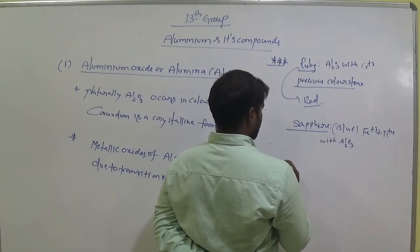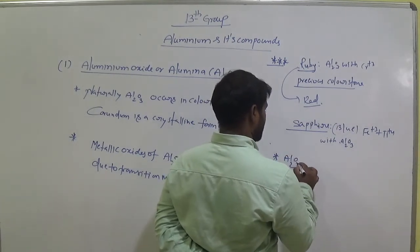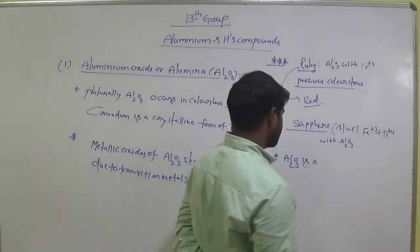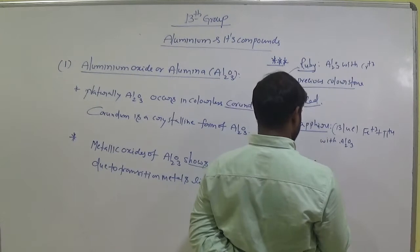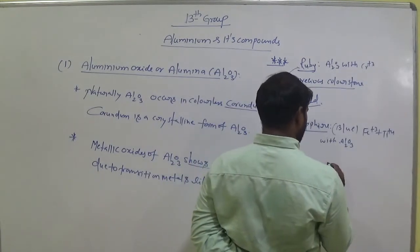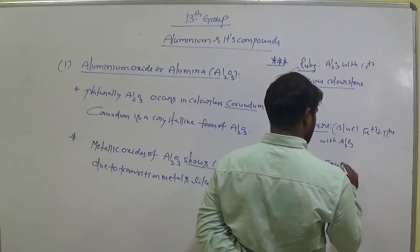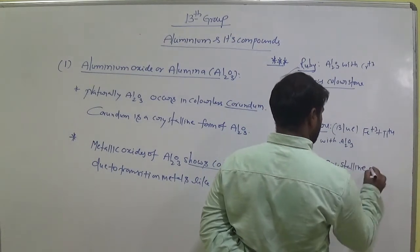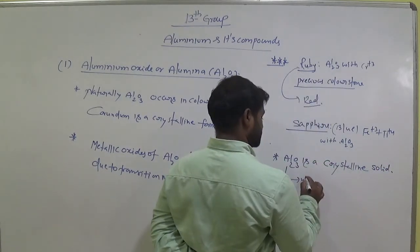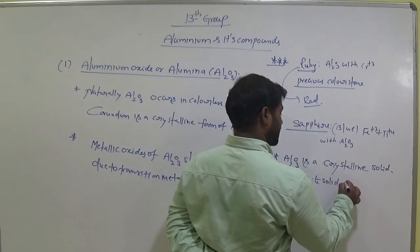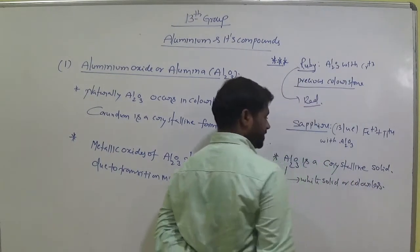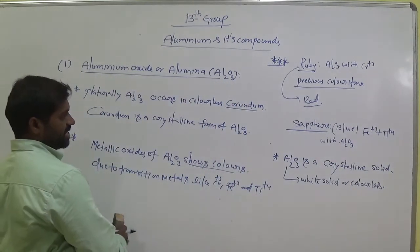And next one, Al₂O₃. Al₂O₃ is a crystalline solid, and it is white crystalline solid or white means colorless. Keep it in our mind, white means colorless.